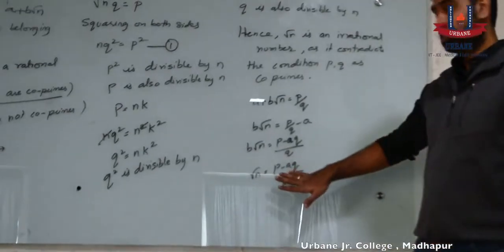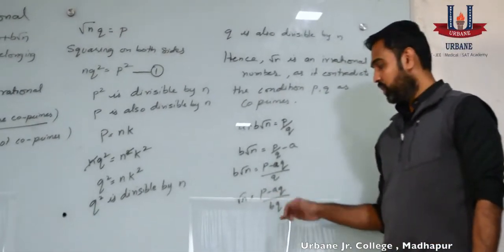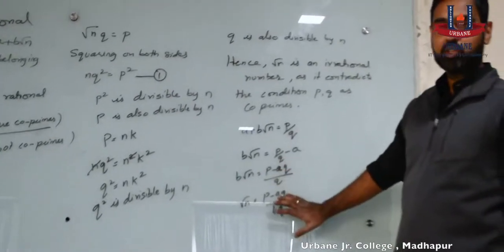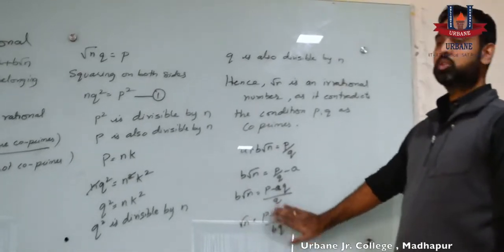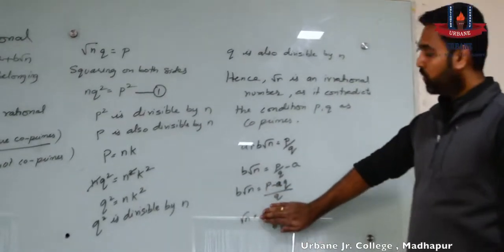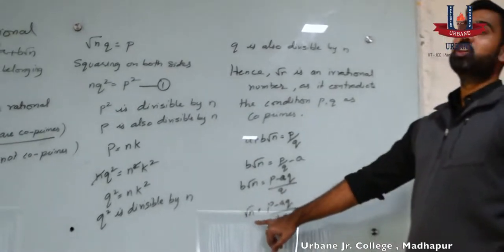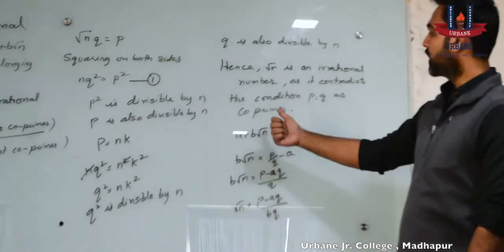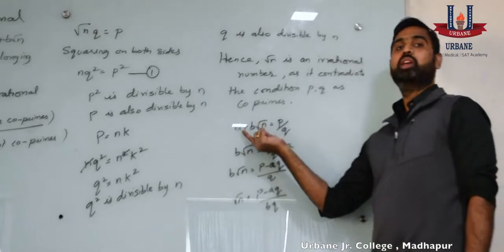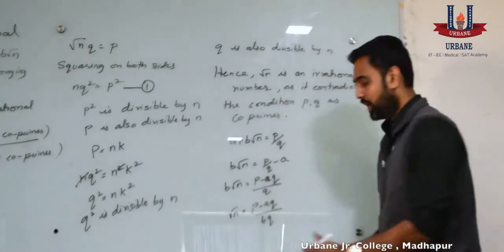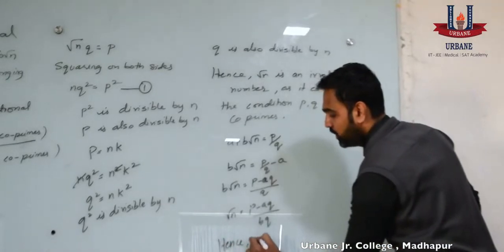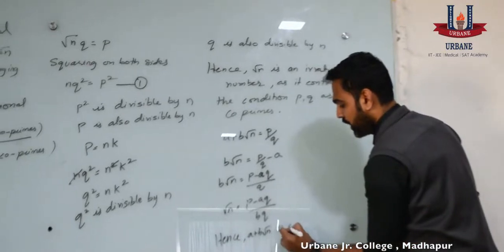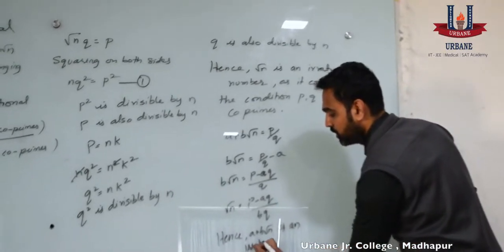Dividing both sides by b, we get root n is equal to p minus a q, all divided by b into q. If we look at the RHS, we have p minus a q by b into q, where p, a, b and q are all rational values. So the arithmetic operation of rational values will again give you a rational value. So the entire RHS is rational while the LHS, square root of n, is irrational, which we have just proved. Hence a rational value cannot be equal to an irrational value. Hence our assumption that a plus b root n is a rational value is false, and we conclude a plus b root n is an irrational number.